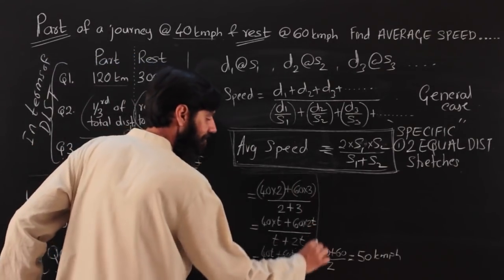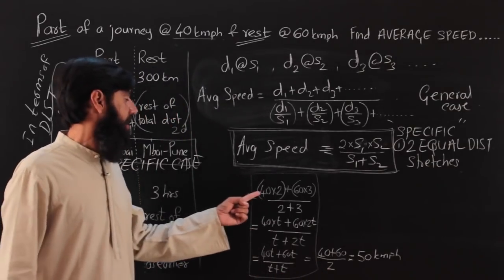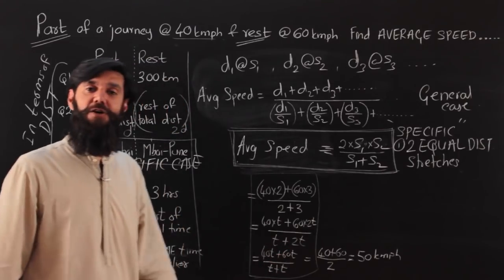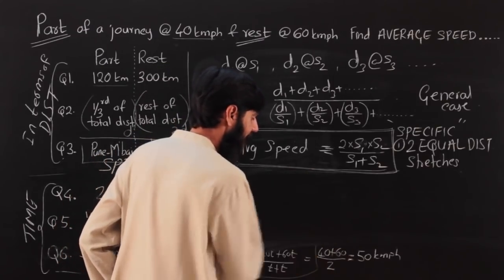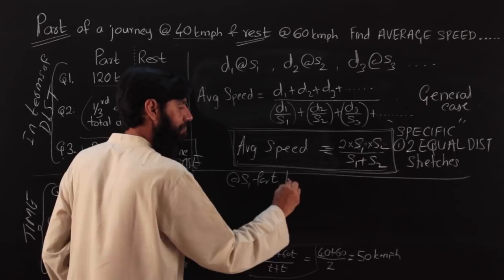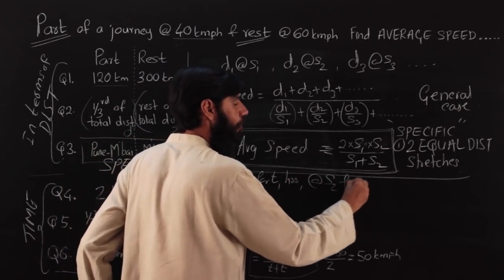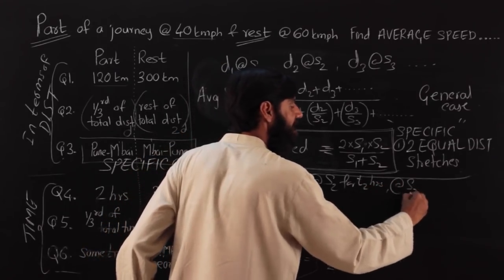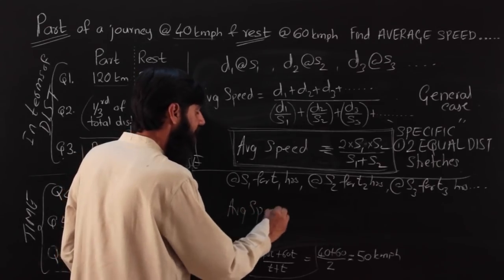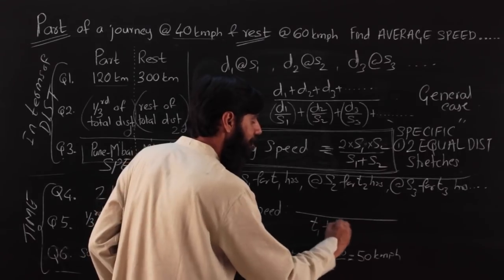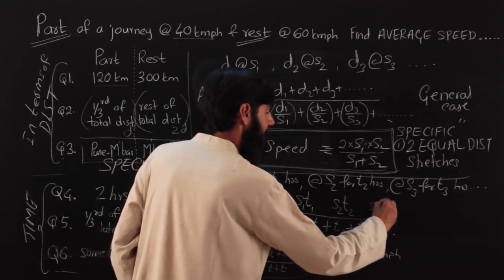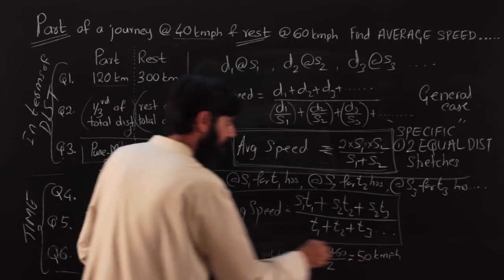When data is given in terms of time, the calculation mirrors the distance case but reversed. If I travel at speed s1 for time t1, at speed s2 for t2, and at speed s3 for t3, then the denominator (total time) = t1 + t2 + t3 — this is given directly. The numerator (total distance) must be deduced: it equals s1·t1 + s2·t2 + s3·t3. So average speed = (s1·t1 + s2·t2 + s3·t3) / (t1 + t2 + t3). This is the general formula when data is given in terms of time.